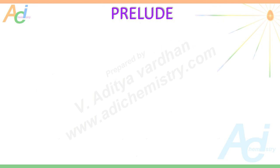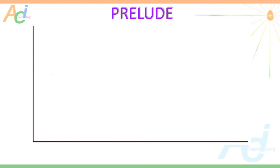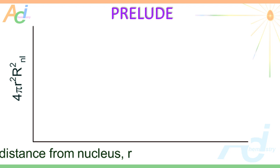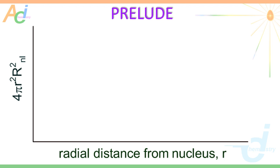Let us have a glimpse of Radial Probability Distribution Curves. These are obtained when the values of Radial Probability Function 4πr²|R_nl|² are plotted against the radial distance from the nucleus.